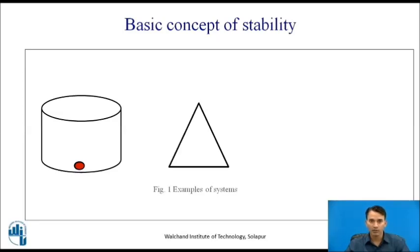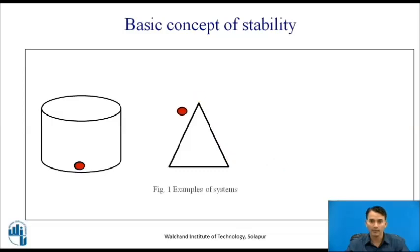Suppose we have a cone where we want to stabilize a ball on the top, which is not possible. So whenever you try to stabilize a solid ball on the top of the cone, it will fall off from either side. Such a system is known as an unstable system.